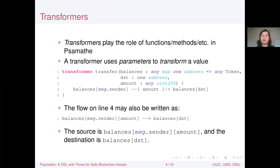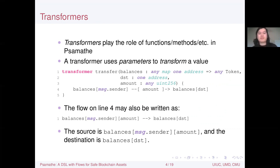We have balances, which is a map from addresses to tokens. The 'any' and 'one' are type quantities: balances is a map containing any number of key-value pairs, with keys of type one address (just a single address value) and values of type any token (token values from zero to the max). Destination is one address, and amount is any U256. The body is a single flow: we look up the sender's balance, select amount tokens from it, and put it into the destination account's balance.